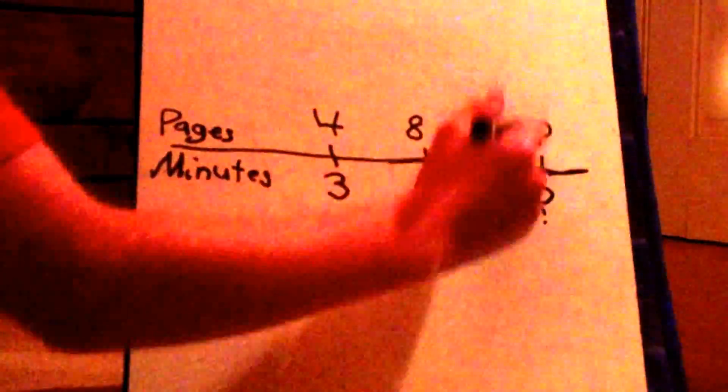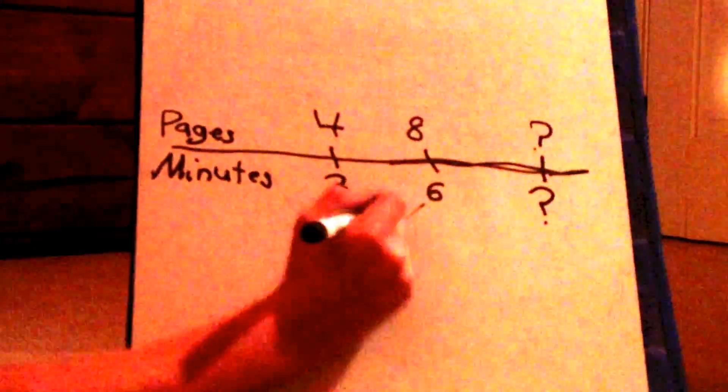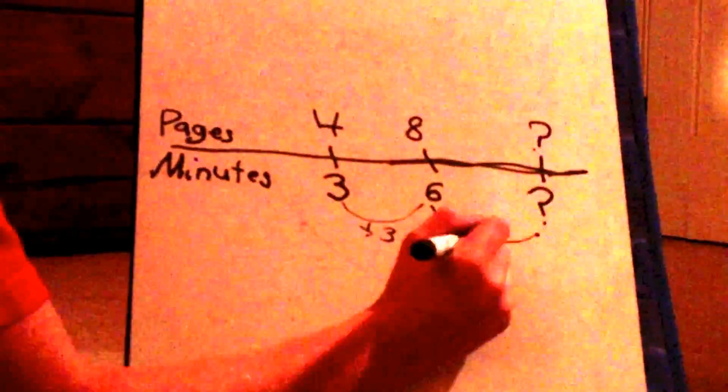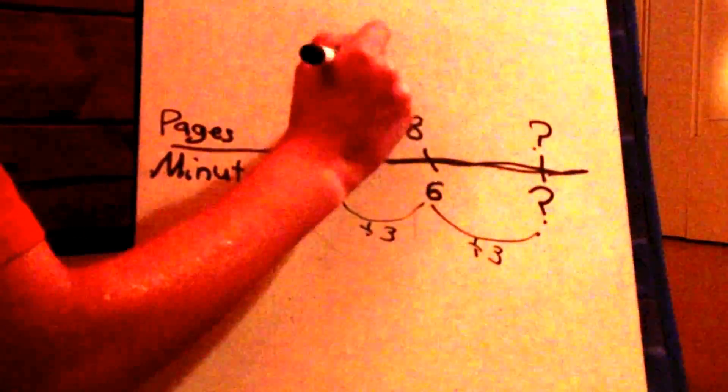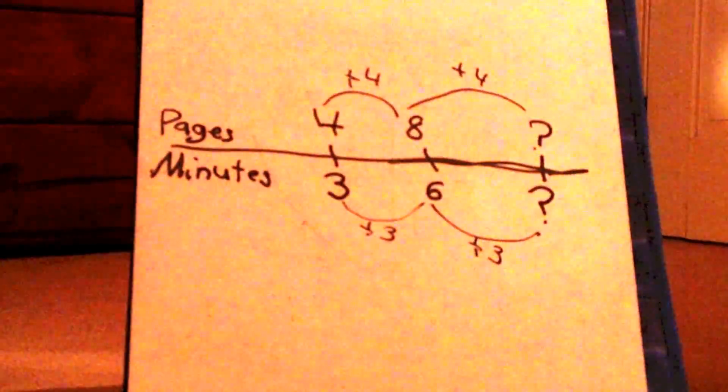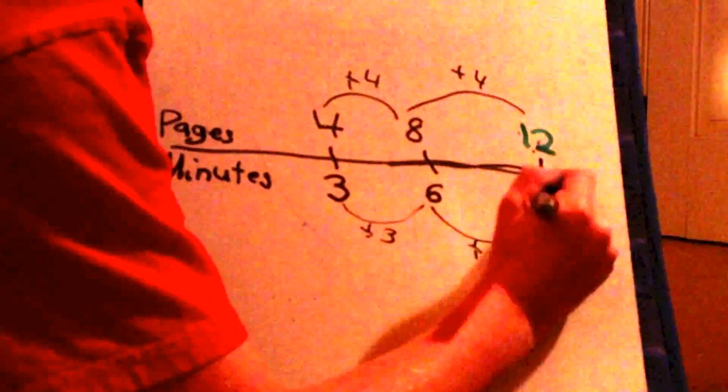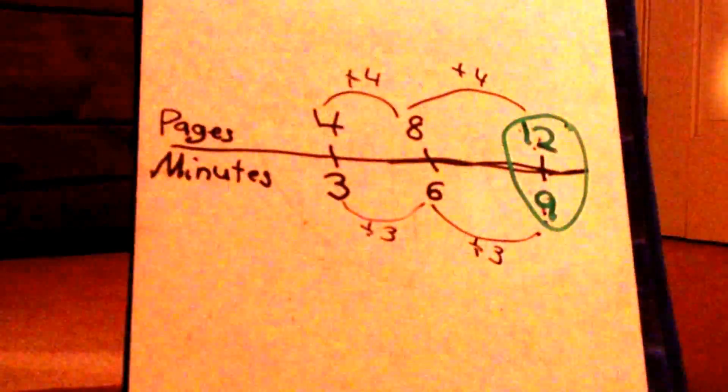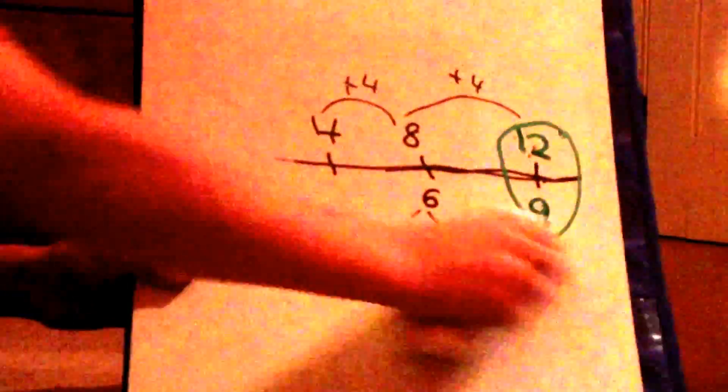And here is a missing value. And as you can see, this does have a pattern, 3 minutes for every 4 pages, 6 minutes for every 8 pages. So to find the missing data, just add the intervals like this, plus 3 and plus 3, plus 4 and plus 4, or whatever is being added. And in this case, it is plus 4 and plus 3.